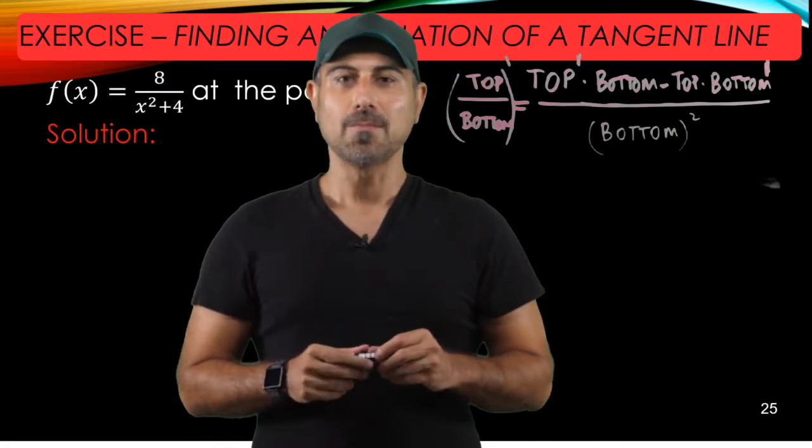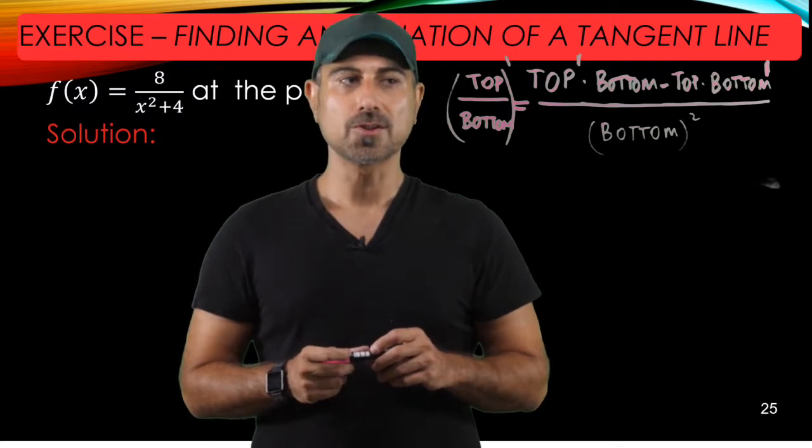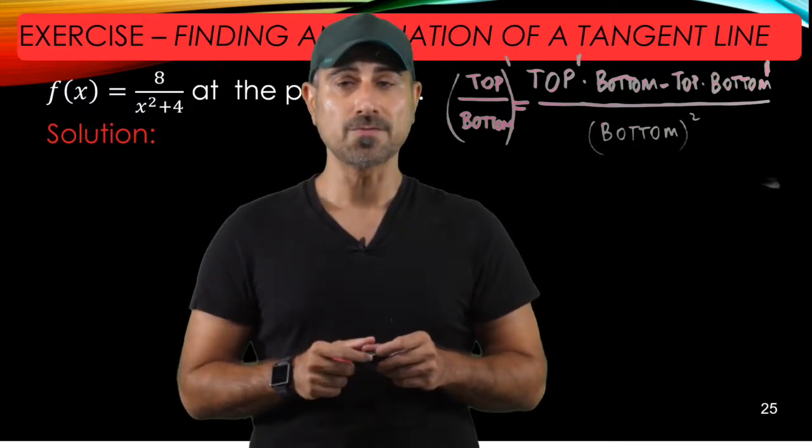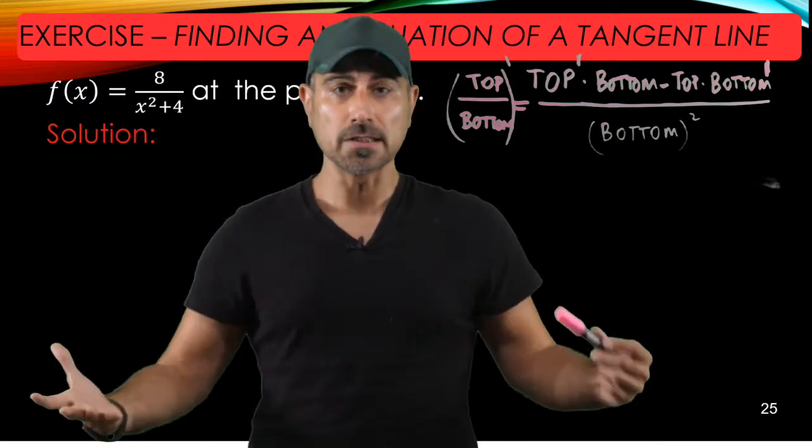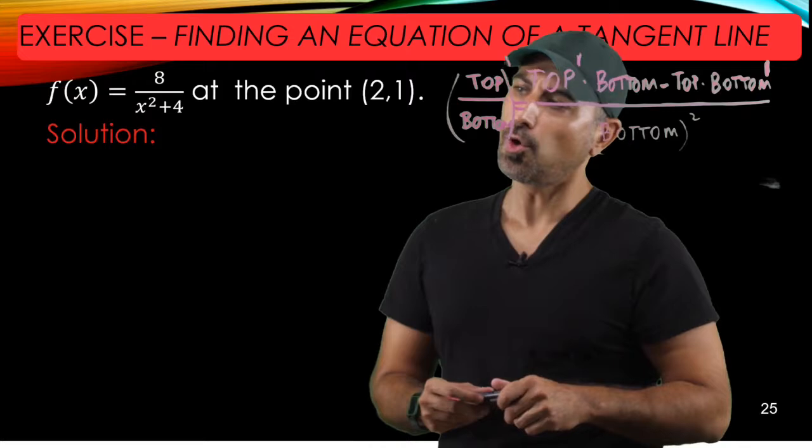Hello, welcome back. In this video we're going to go through an application of derivatives, which is finding the equation of a tangent line to the given function at a given point. Our function is 8 over x squared plus 4, which is a quotient, and the point is given to be (2,1).